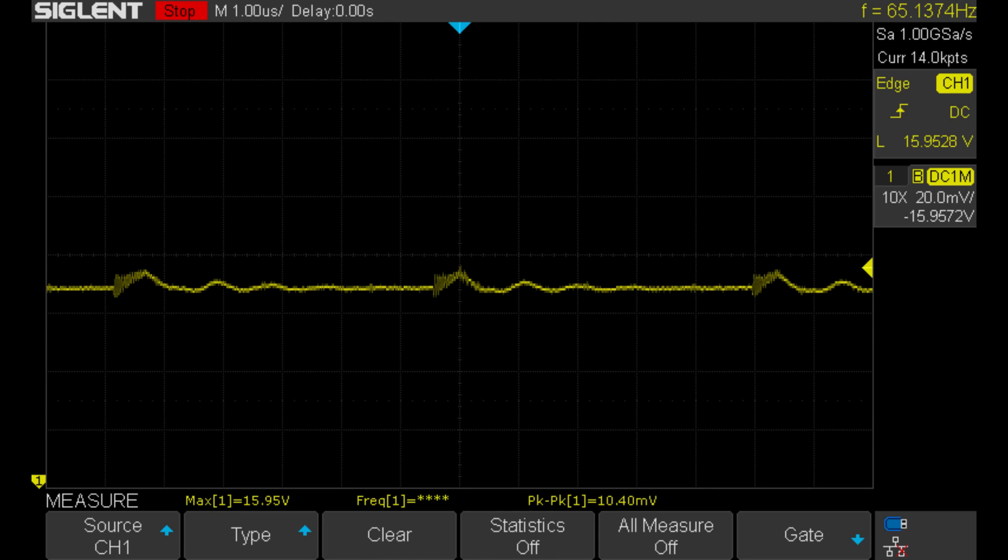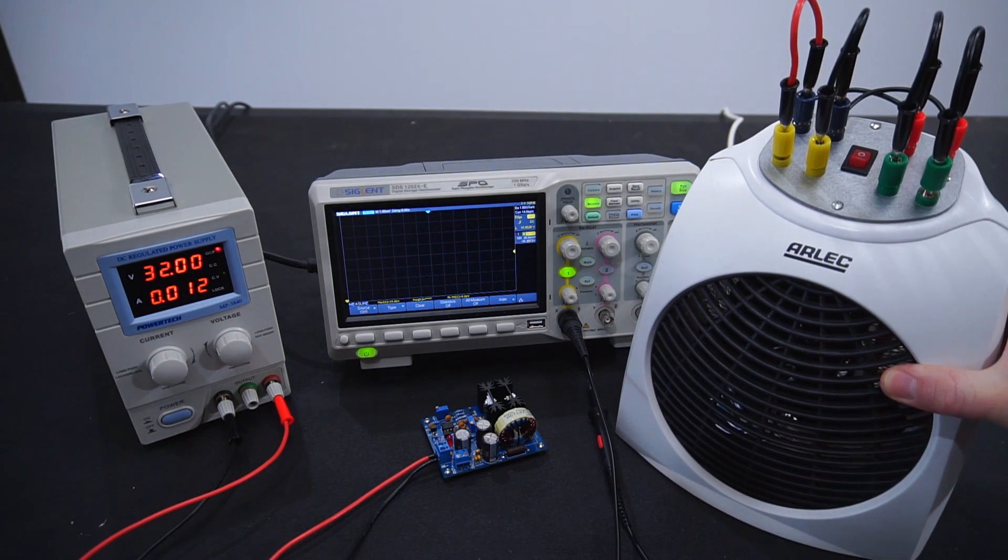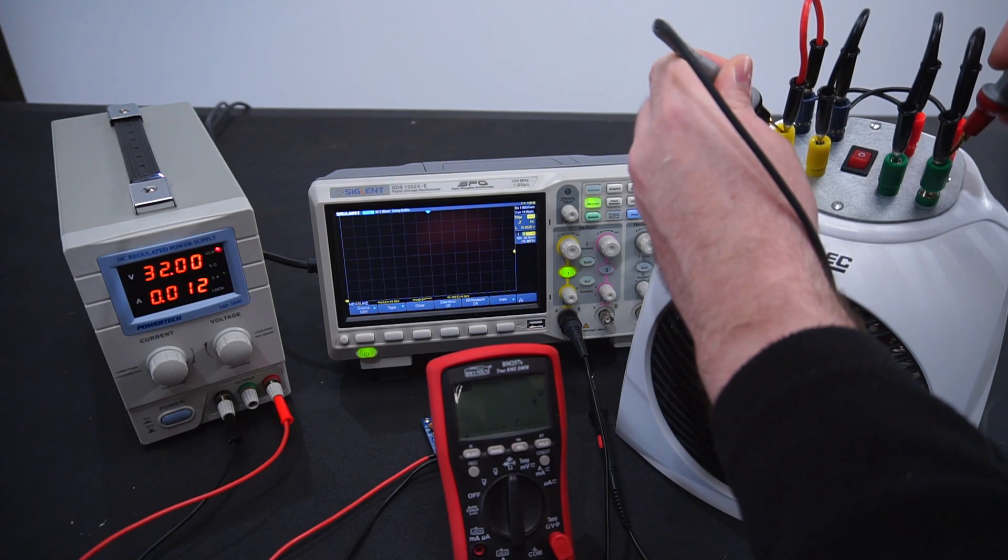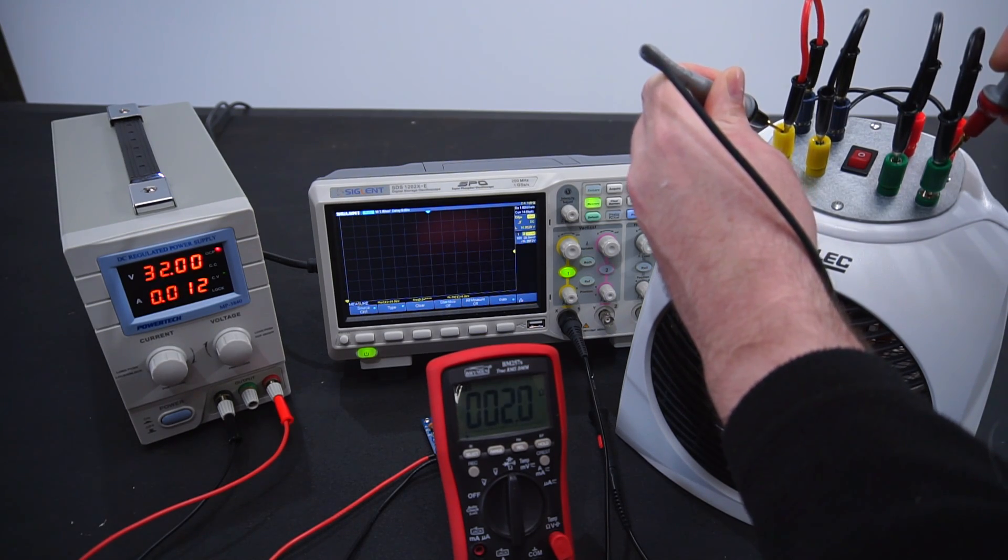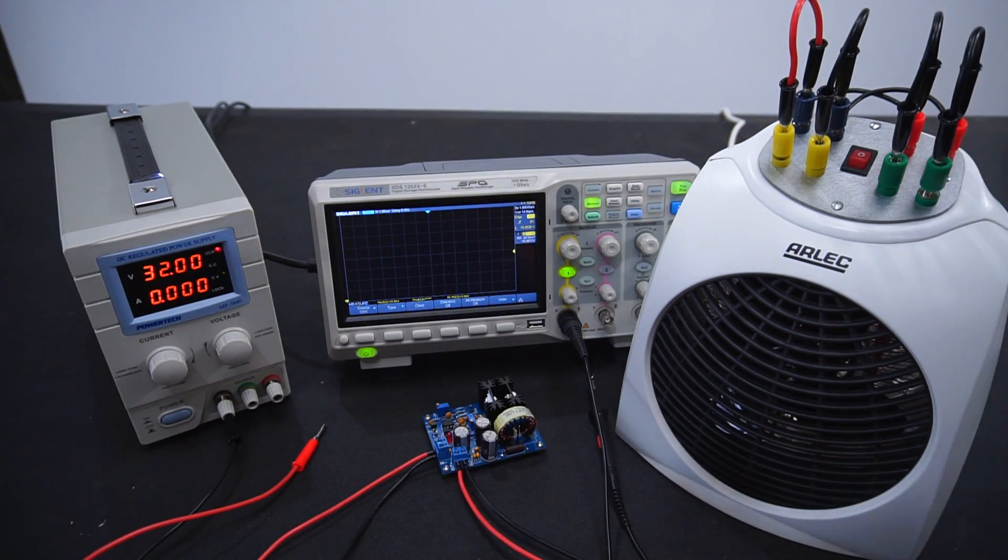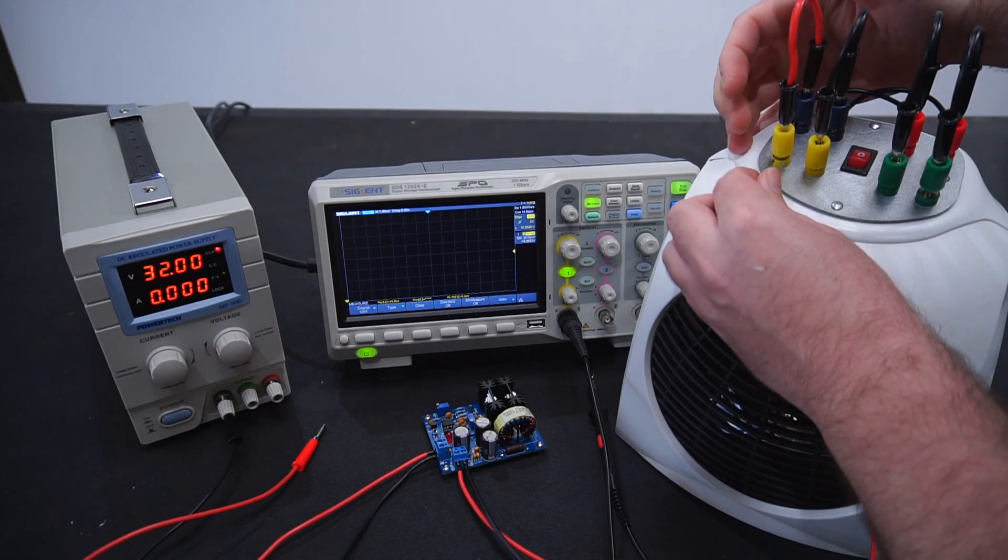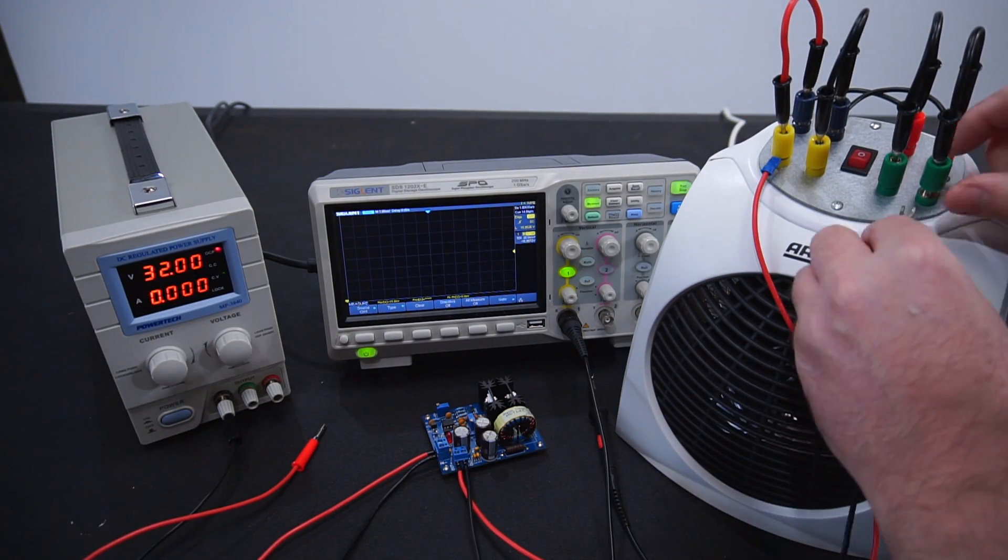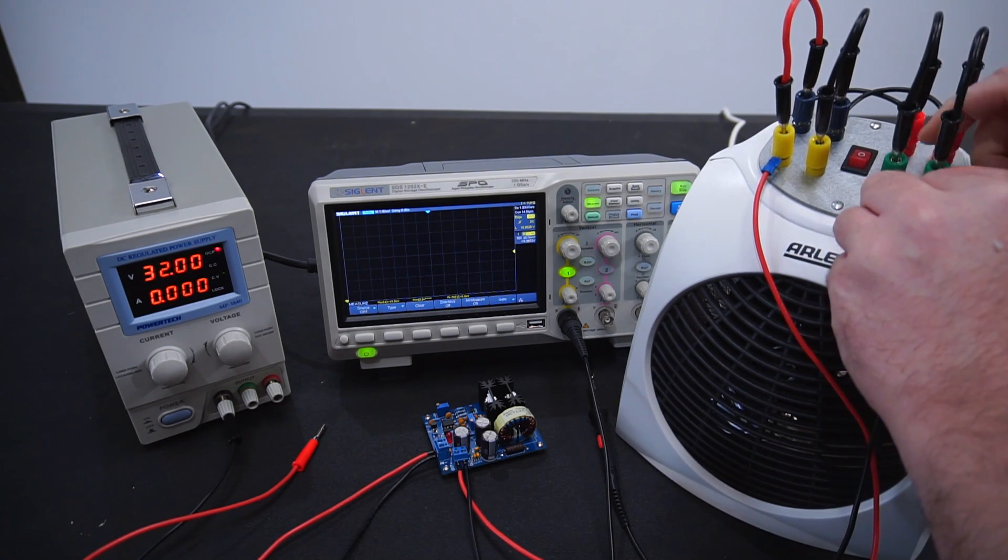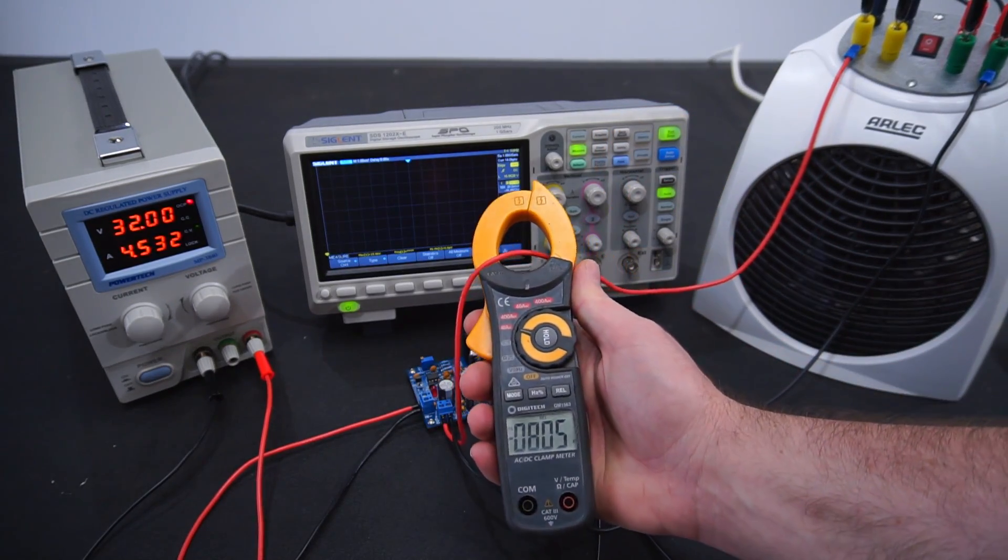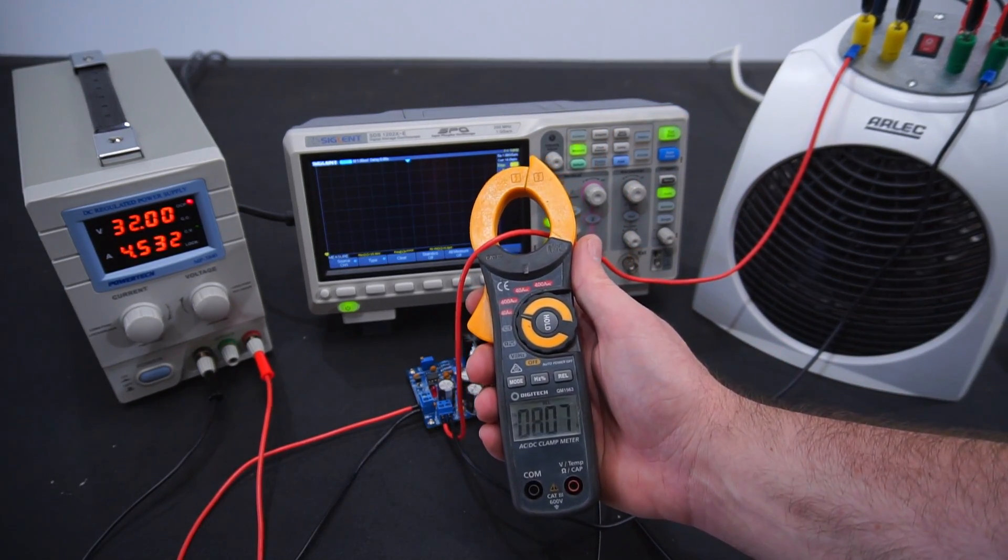But really the real test comes when a load is drawing current from the buck converter. To do this I'll use my resistive load tester that is currently configured to be a 2 ohm resistive load. To thoroughly evaluate the amount of voltage ripple I want to draw the maximum 8 amps of current from my buck converter. I'll use my clamp meter to measure the current and my load tester is drawing just over 8 amps of current. Perfect.